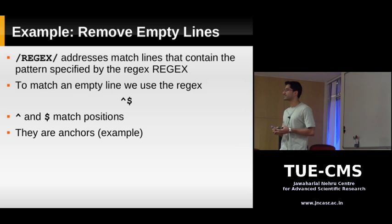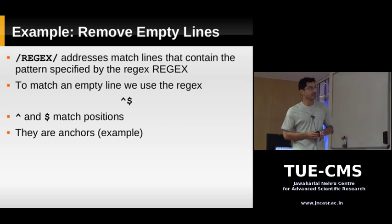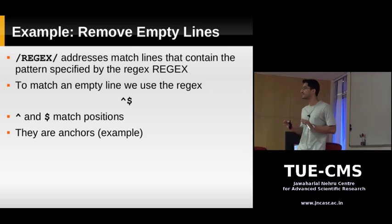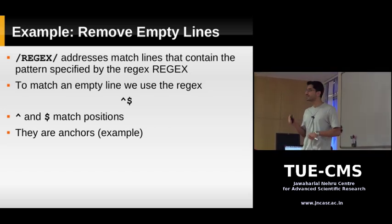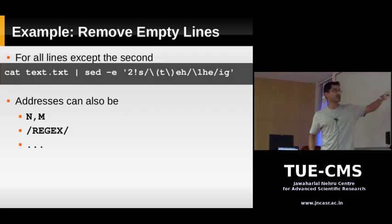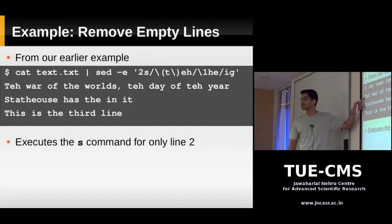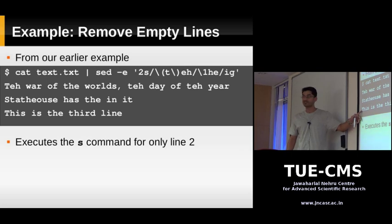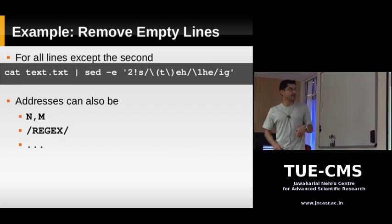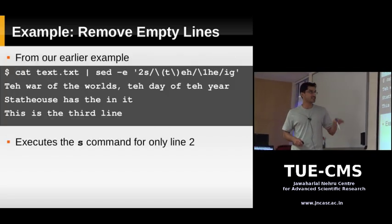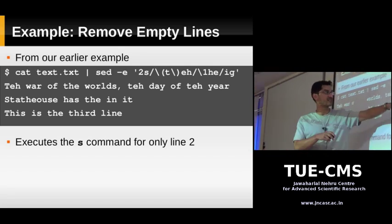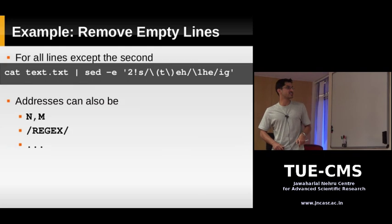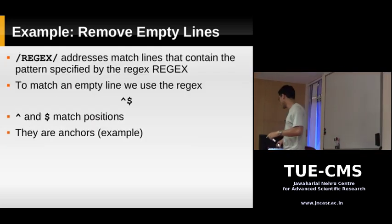The caret matches the beginning of your line — the position just before the first character. If you're looking at this file, the caret is going to match that position on each line. On line one it matches this position, on line two it matches this position. The dollar sign does the same thing but at the end of the line — it matches the position just after the last character.